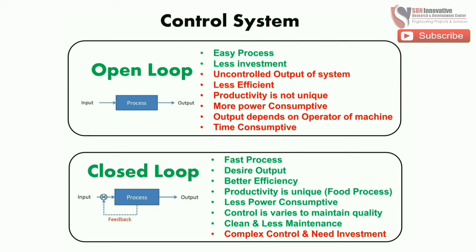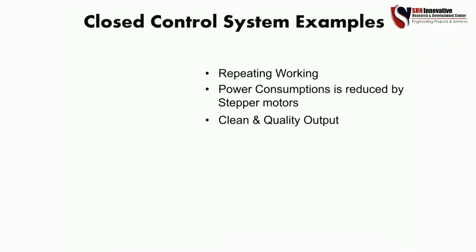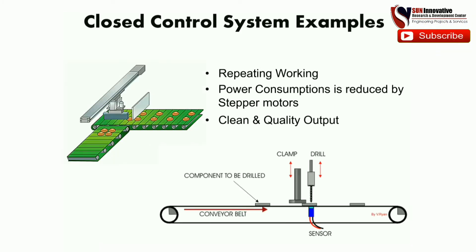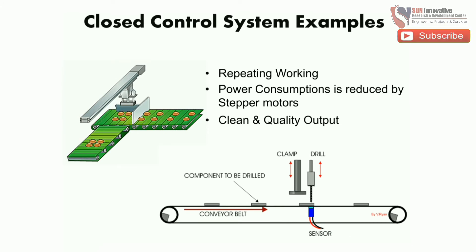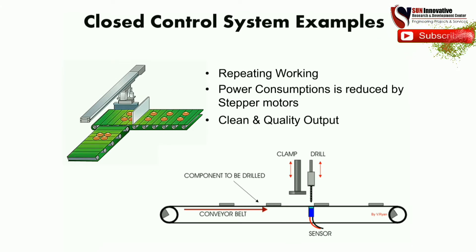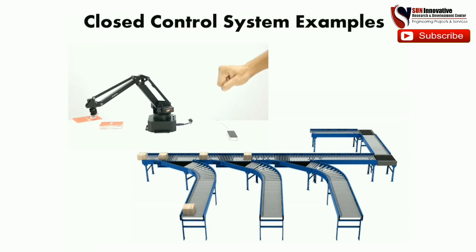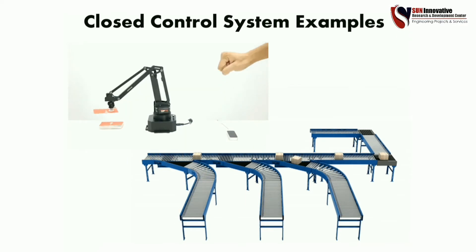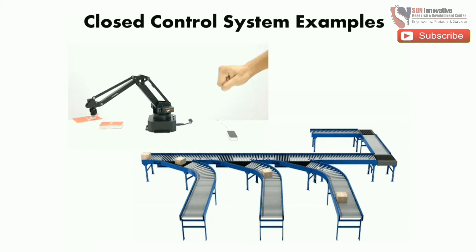Here is an example of a closed-loop system: repeating work is automated, power consumption is reduced by a stepper motor, clean and quality output is achieved, and machines can run without main power. These are very important functions of closed loop. Another example shows that the system can follow a reference value given to it.